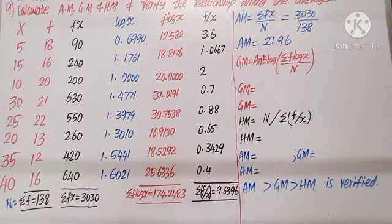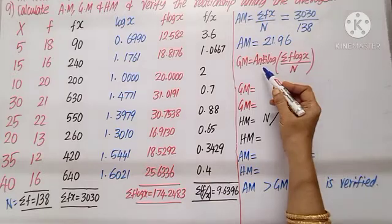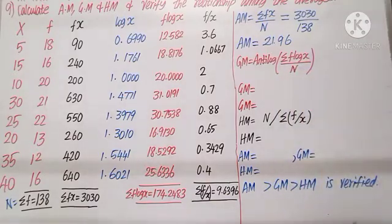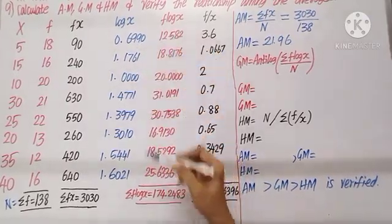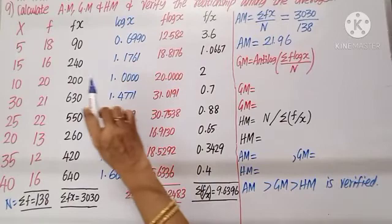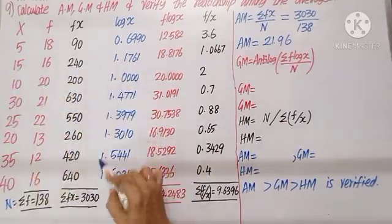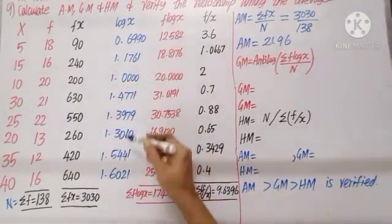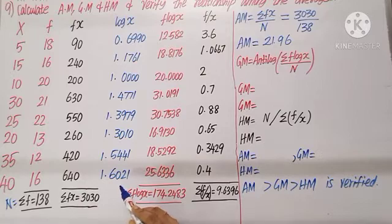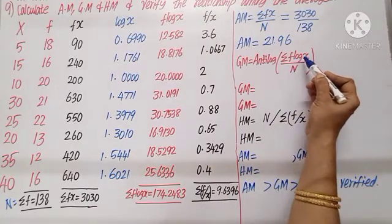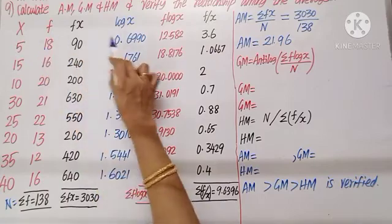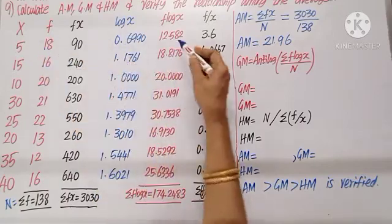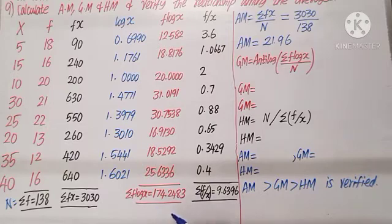For geometric mean, the formula is antilog of sigma(f × log x) / n. Create two columns: first find log x — if two digits, characteristic is 1; if one digit, characteristic is 0. Check the logarithm table and write values. Then compute f × log x for each row, tabulate and total: sigma(f log x) = 174.2.